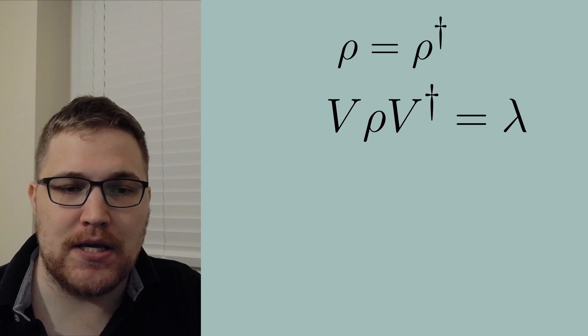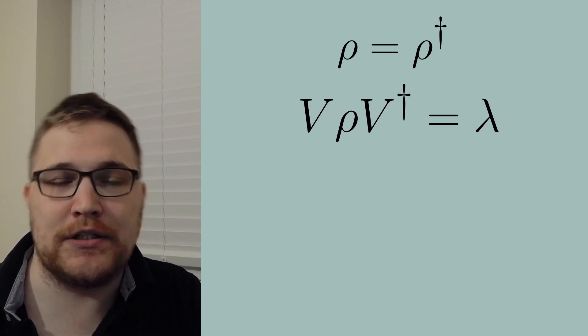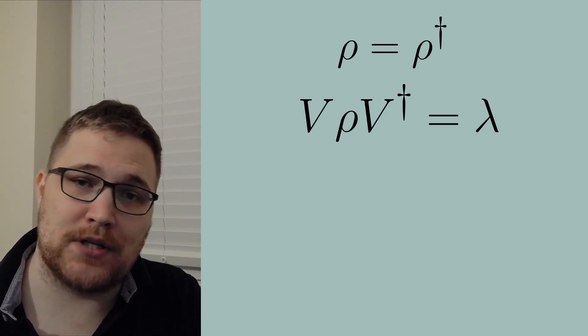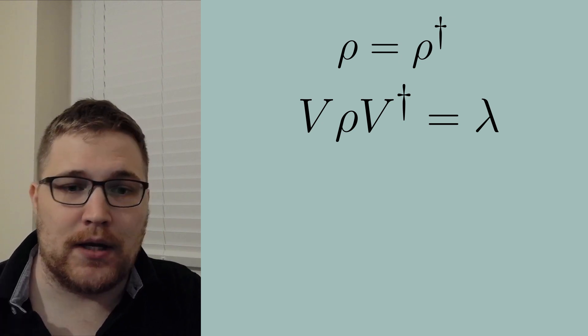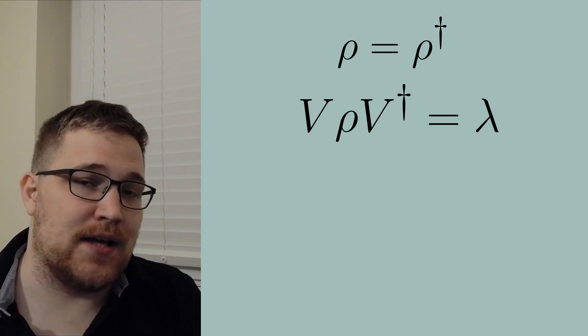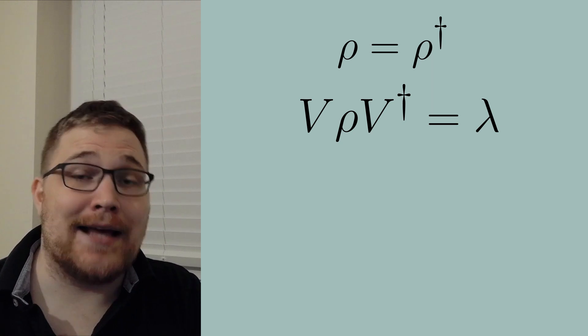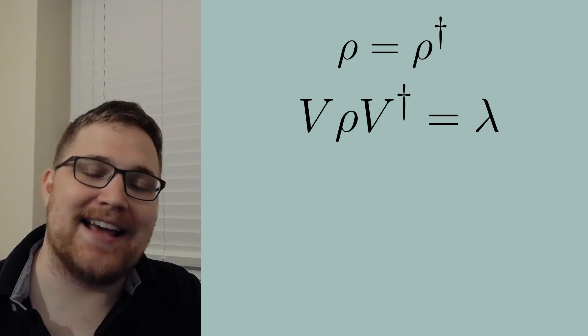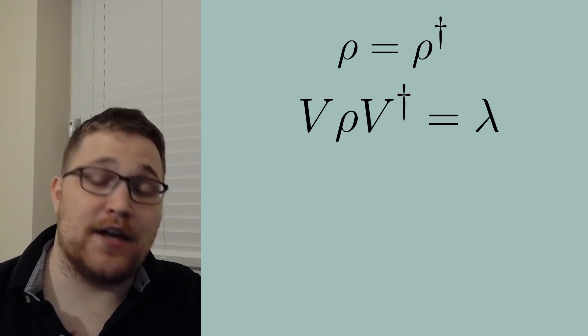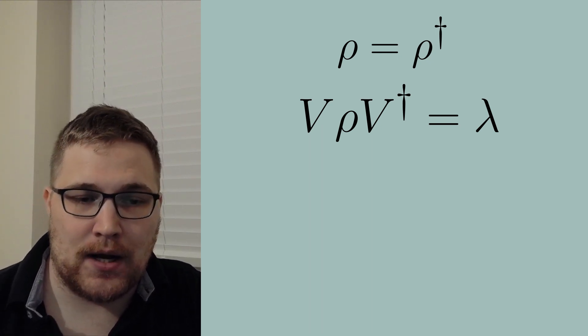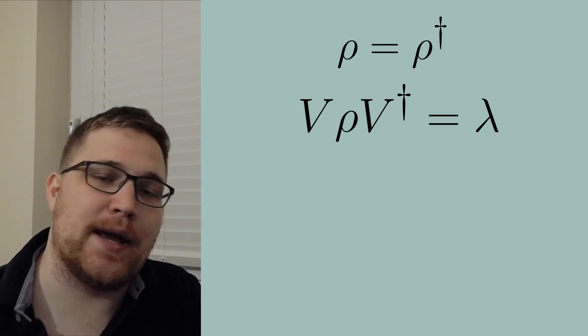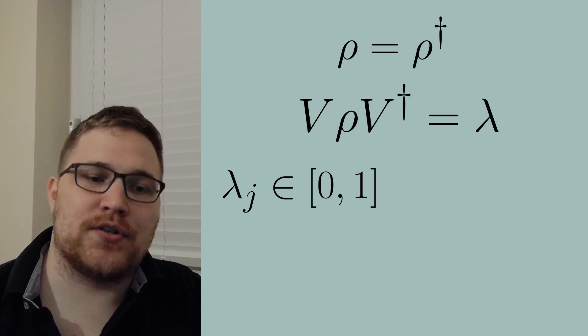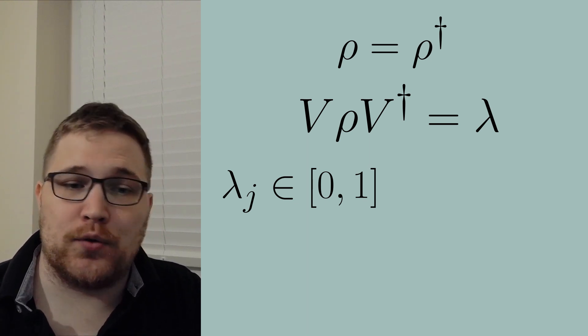We can introduce the unitary transformation V which diagonalizes our matrix ρ. So let V times ρ times V dagger equal to λ. Now what this tells us is that V is a unitary transformation that diagonalizes ρ and λ here is a diagonal matrix with the eigenvalues of ρ on the diagonal. Then from what I said previously basically boils down to that the λ_j's or the diagonal entries of our matrix λ these all sit on the real line between 0 and 1.